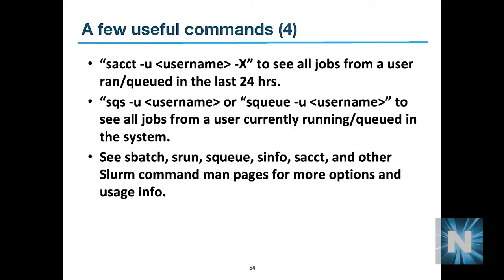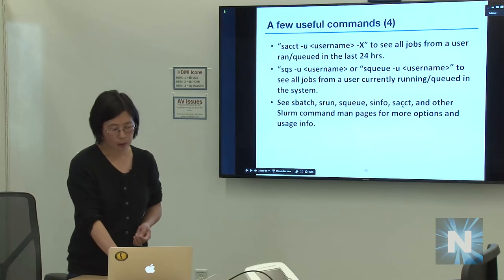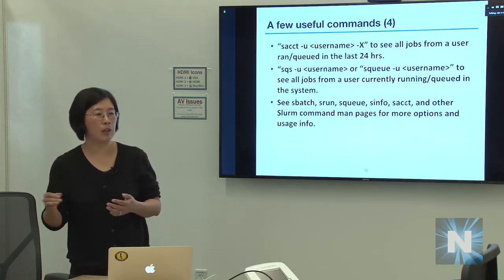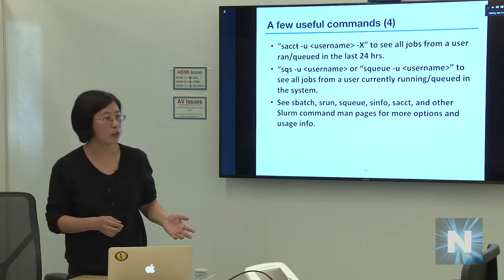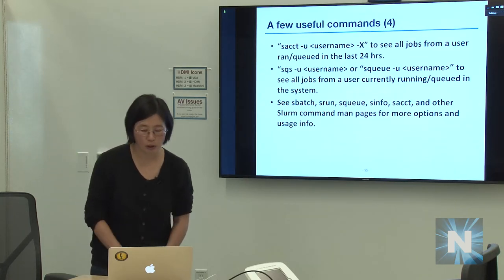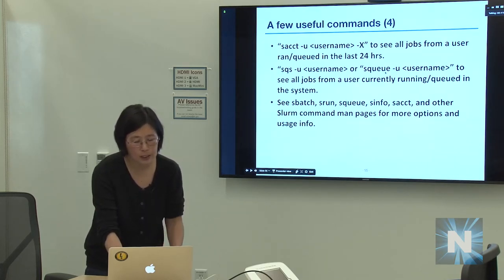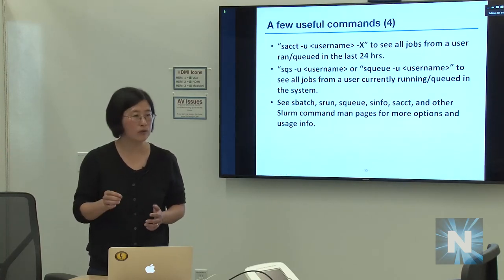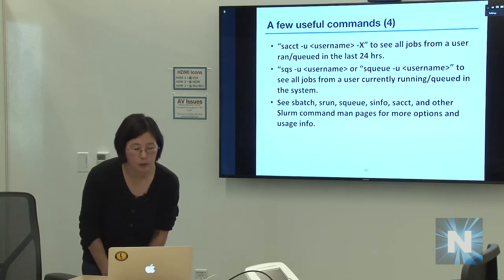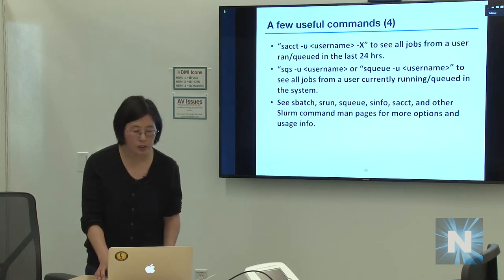'sacct' queries the SLURM accounting database and can list historical job information — start time, end time, elapsed time, node count, and other statistics — for yourself or other users. 'sqs' or 'sq' shows queued jobs with node requests, QoS, and the reason a job is still waiting.